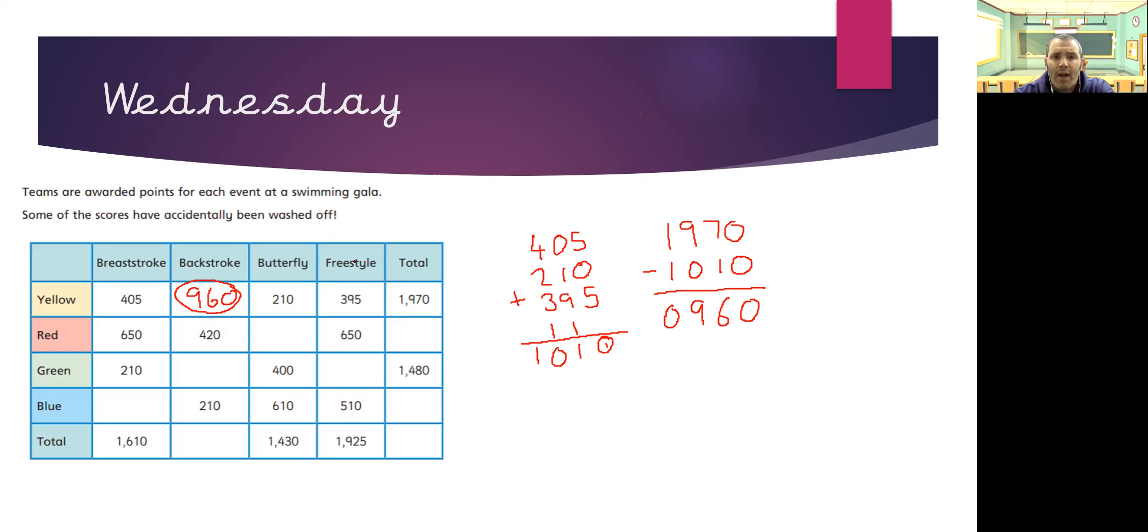So your next column to look at will be the butterfly column. Fill in the missing gap there. Then the freestyle column. And now you should have enough information to be able to work through the rest of the missing answers. Pause the video here to complete those.